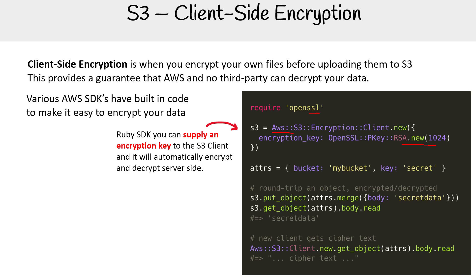We're configuring it globally for the S3 client, so that anytime we do a put or get, it's going to automatically use that key. We have a key and a bucket, and then we provide some data — this is the secret data. Notice we put the object, so we send it to S3, and then we do a get object to read it back, and it's going to decrypt the data.